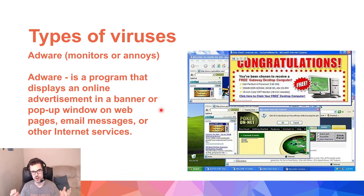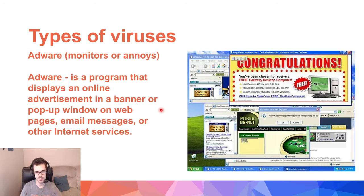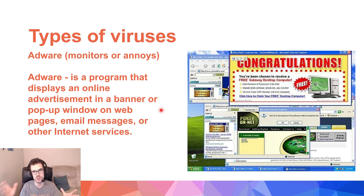Next is AdWare, which is not like malware — malware is very malicious, but AdWare is just straight-up annoying, though you should still be careful about it. AdWare is a program that displays online advertisements, banners, or pop-up windows on web pages, email messages, or other online services. It can come to your inbox via spam or pop up on your screen. If anything pops up on your screen, shut your computer down immediately and get it off the Wi-Fi. Don't click whatever is popping up — things like 'Congratulations, you've won a million dollars' are total lies.